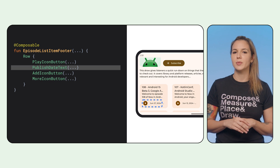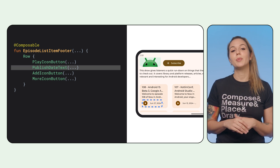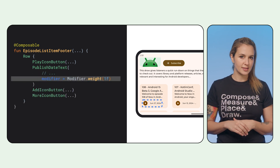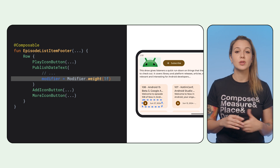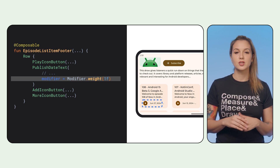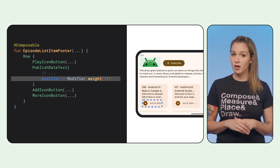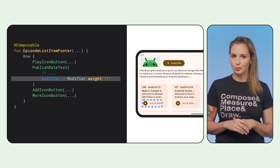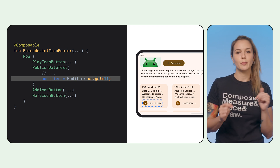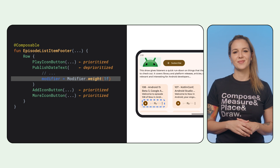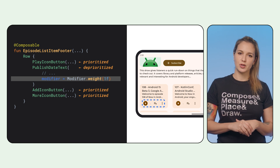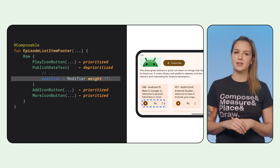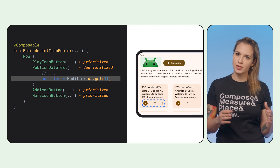To ensure important information is prioritized, you can use the powerful weight modifier. You can assign weights to items you want to deprioritize when there's not enough space. So we add a weight modifier to the text composable to ensure we hide the publish date when there's no room, and prioritize showing the buttons. Remaining unweighted composables in the same parent will then get prioritized and measured first, keeping their original sizing.